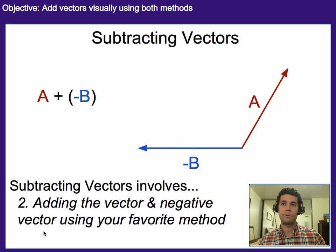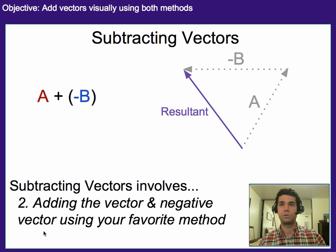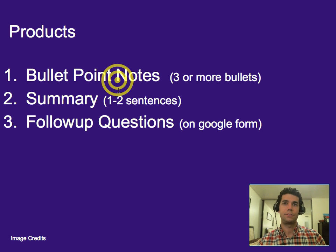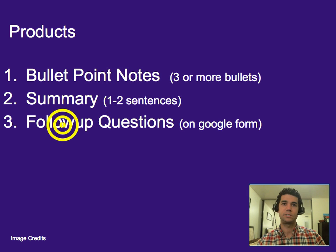So I'm going to redraw this, and now we're going to add them as we would any other two vectors. I'm going to do the tip-to-tail method, so I'm going to move the negative B up, and what we get is that the resultant vector is this one right here. That's it. Three or more bullet points worth of notes, a one-to-two-sentence summary, and your follow-up questions on Google Forms, please.